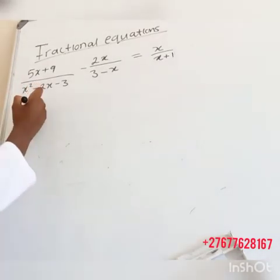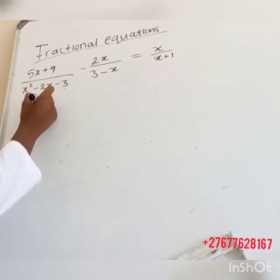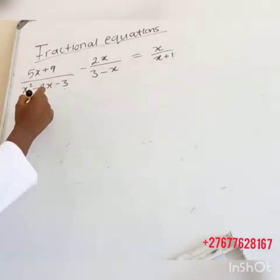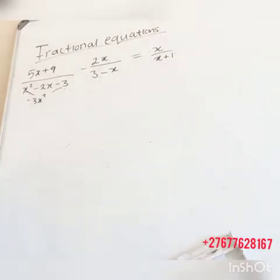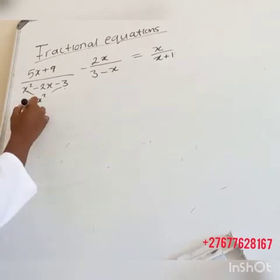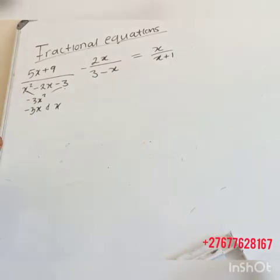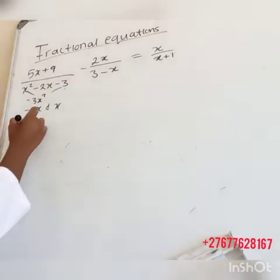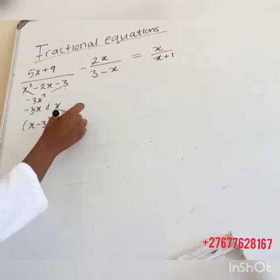Let's factorize it quickly. If we say x squared times minus 3, we get minus 3x squared. We look for two numbers: when we multiply them they give us minus 3x squared, but when we add or subtract them they give us minus 2. So it's going to be minus 3x and a positive x. After factorizing, our denominator is x minus 3 and x plus 1.